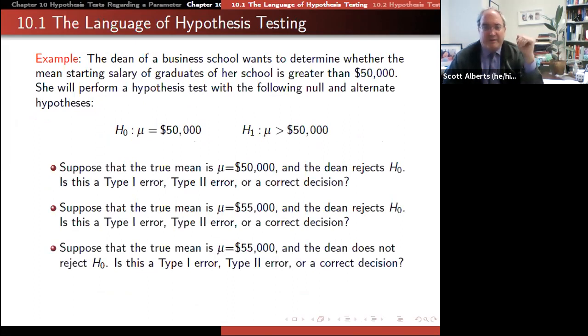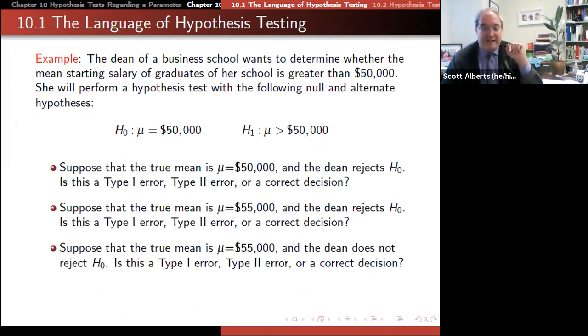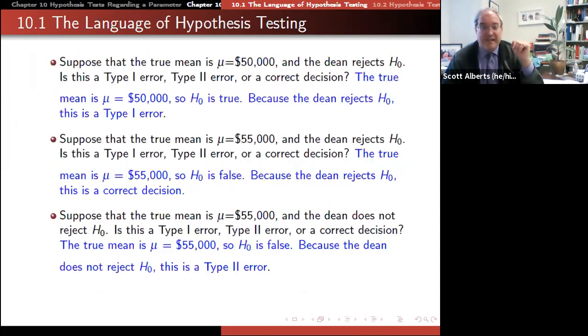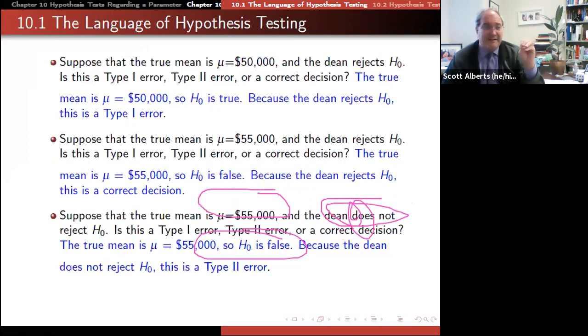The last slide here is we wanted to see an example. So the dean of a business school wants to see whether the mean salary is greater than $50,000. So if the mean is $50,000 or less and the dean rejects the null hypothesis, is that right or wrong? And is it a type one or type two error? And the answer is it's a type one error because we rejected the null hypothesis, but we really shouldn't have. And so you can read these other two examples, but if the true mean is higher, but we reject it, that's good. And so we found the difference that was really there. And then the last one is there is a difference, but we fail to find it. And that's going to be a type two error.